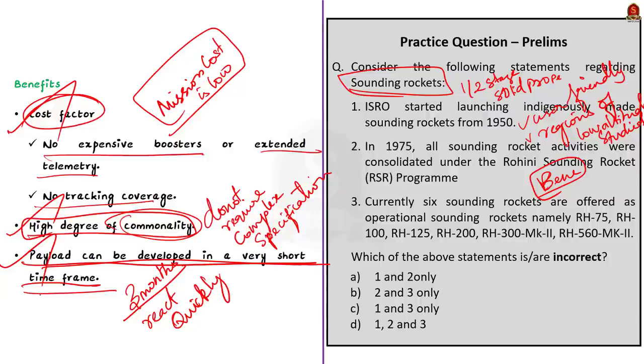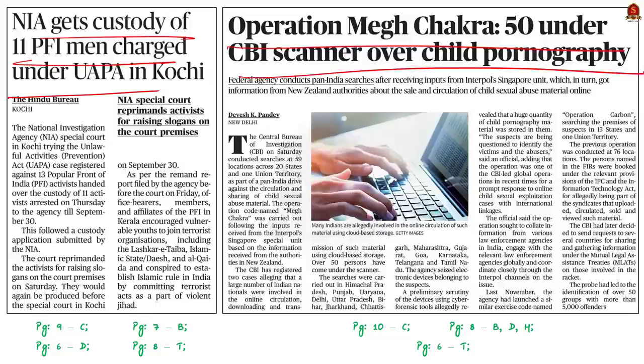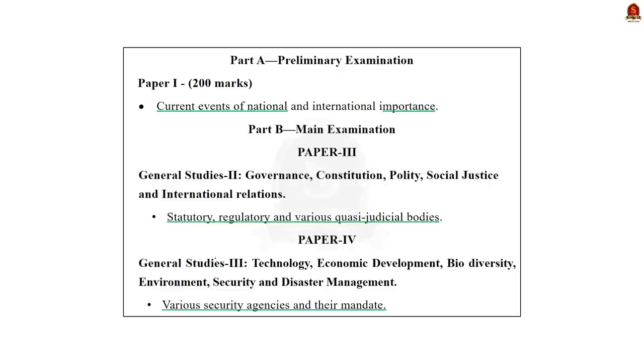So with these learnt points let us move on to the next news article discussion. Take a look at these news articles. They describe about the recent operation carried out by both Central Bureau of Investigation that is CBI and National Investigation Agency that is NIA. See while CBI has targeted groups in India which circulate child porn videos, NIA has launched investigation against terror modules across various states in India. So this is the crux of the news article given here. In this context let us understand some of the differences between both NIA and CBI. Before that the syllabus relevant to this news article is highlighted here for a reference.